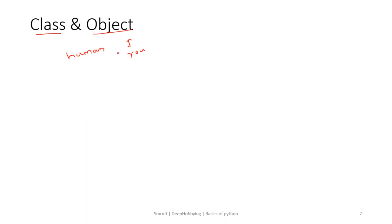You and I are real, tangible things, and 'human' is more like a concept — someone who has two eyes, two hands, one nose, some intelligence, and many other things. We all have the same properties or attributes of the concept 'human,' that's why we are objects under this concept or class 'human.' I hope this example clears your doubts regarding object-oriented programming.